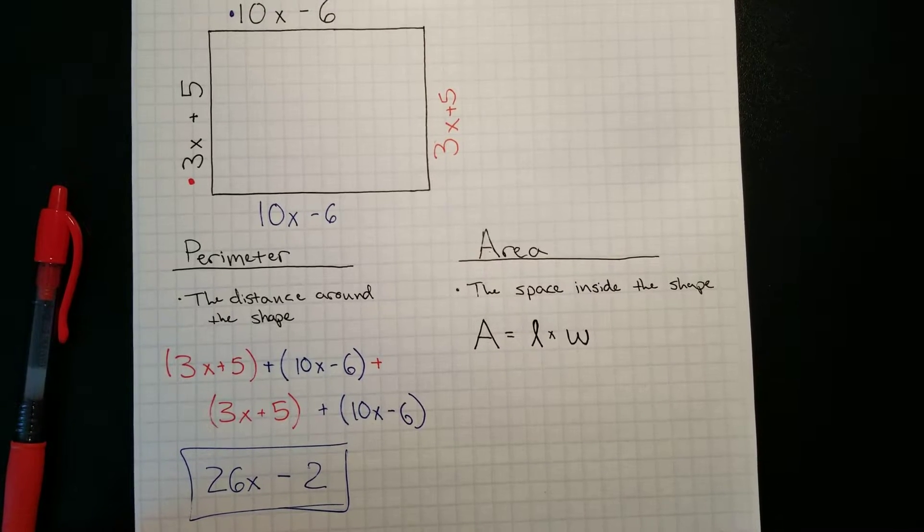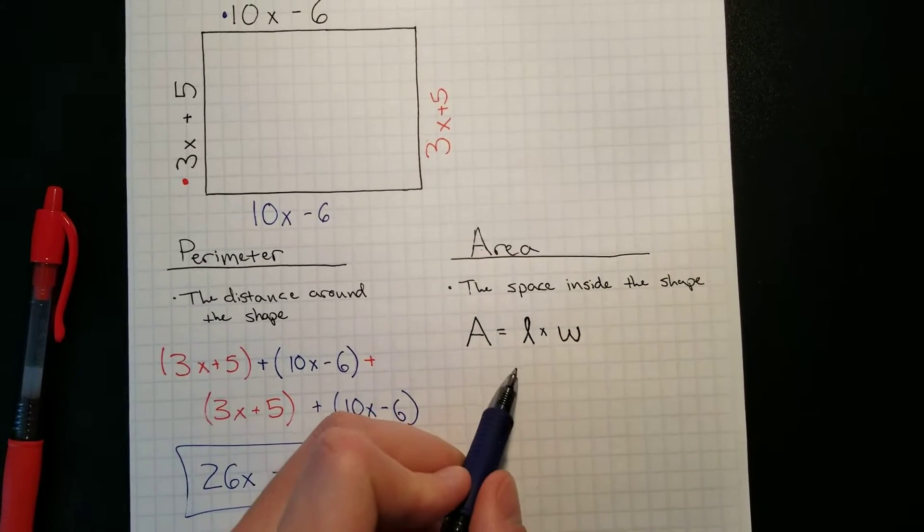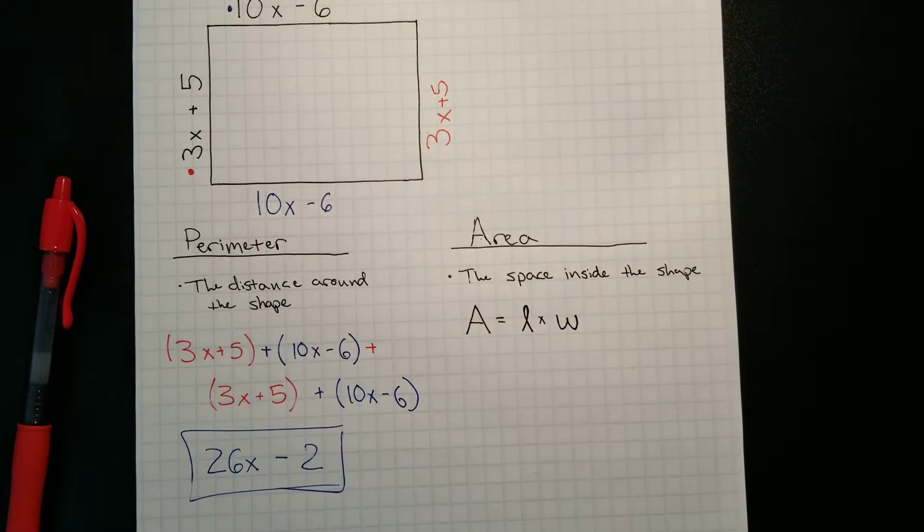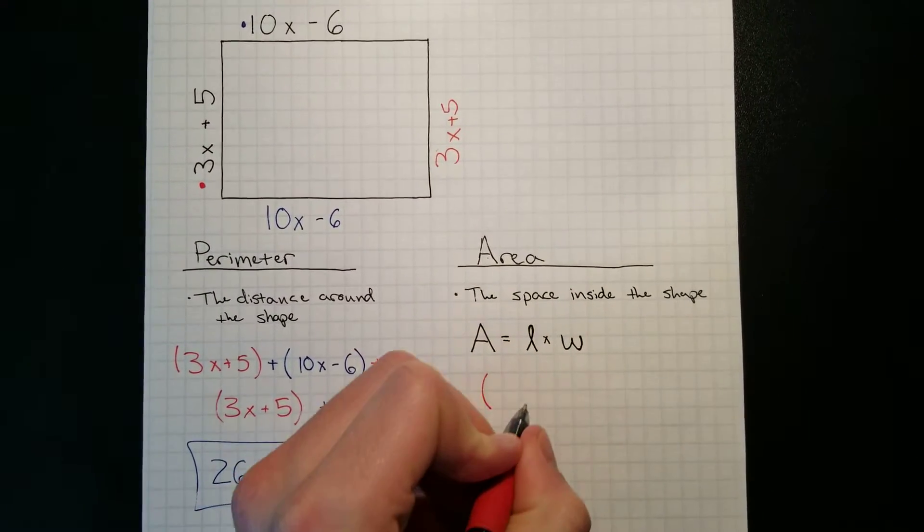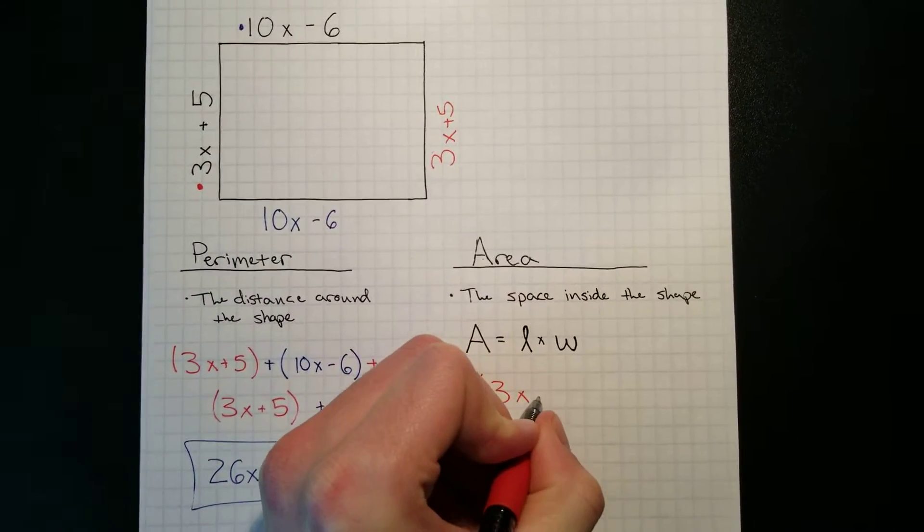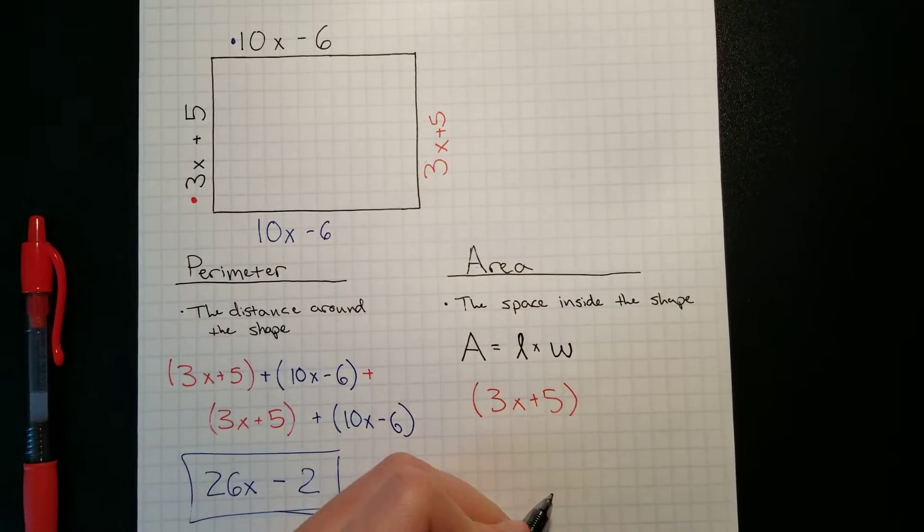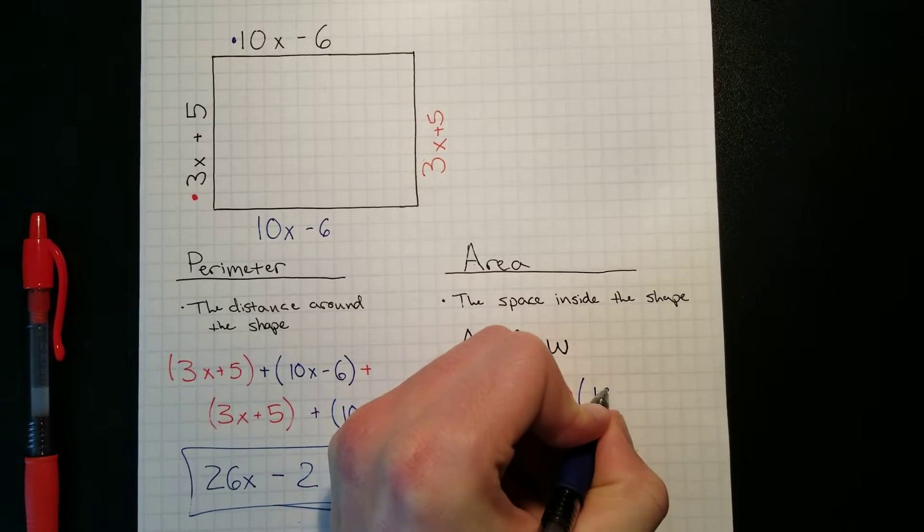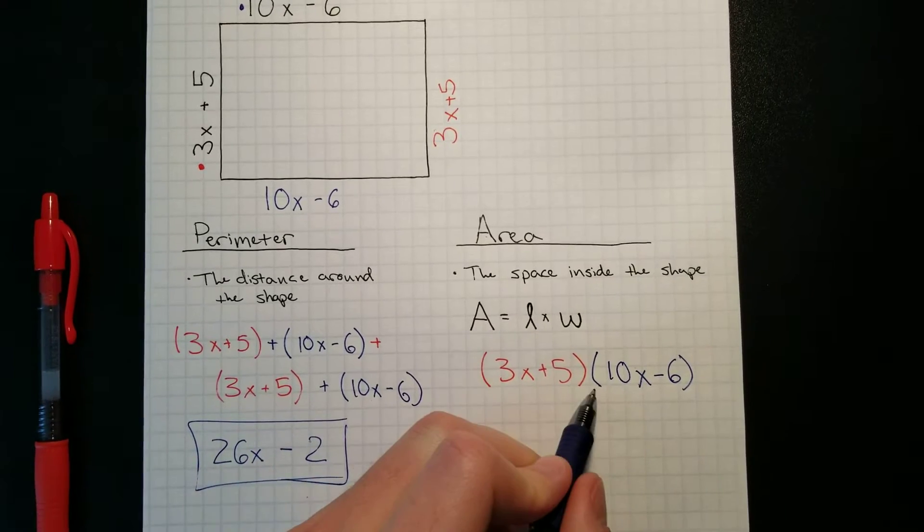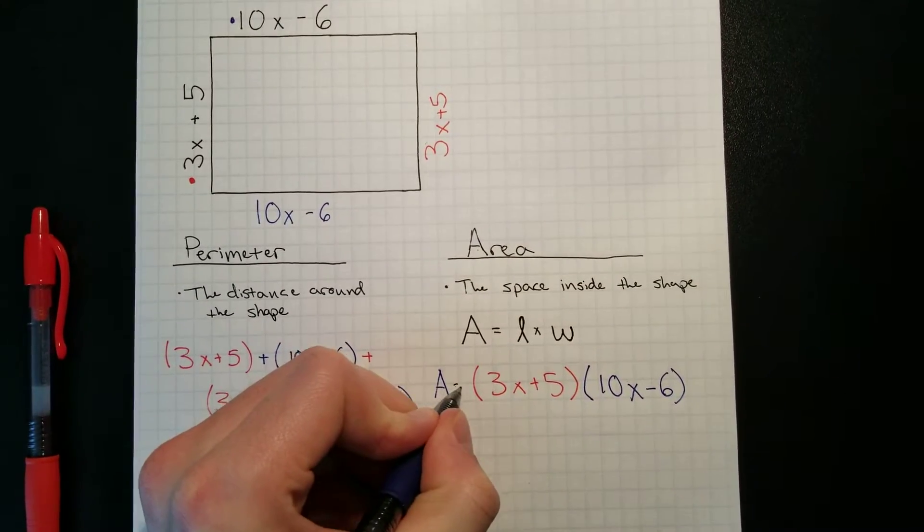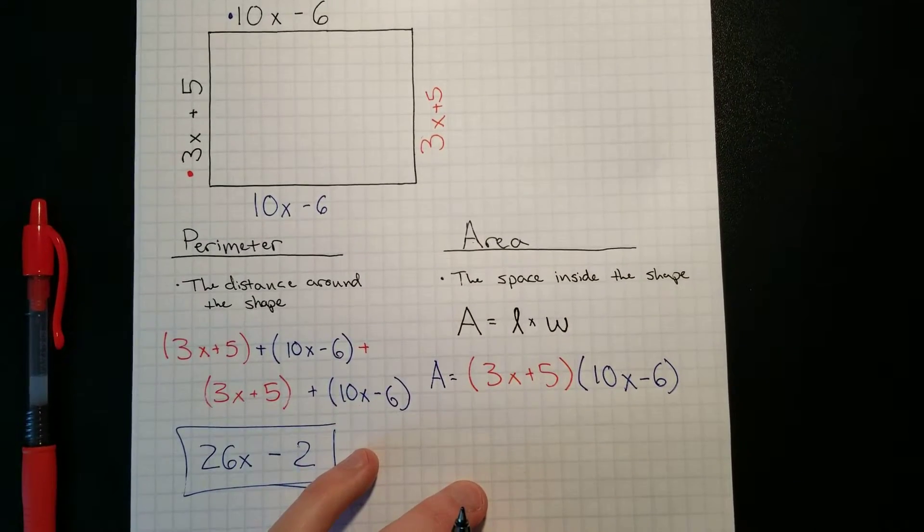Now we're going to move on to area. So area is equal to length times width. Again, the length of this is 3x plus 5, and the width is 10x minus 6. So we've written those out. Area is equal to that. We've written these out as a multiplication. Now this should look familiar because we've been doing problems like this before.